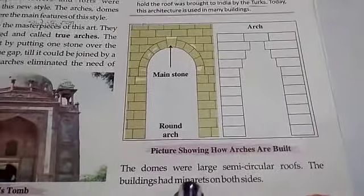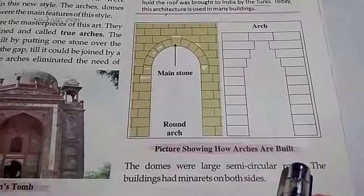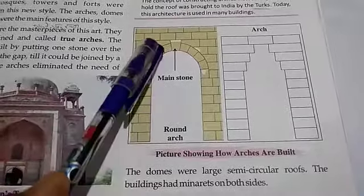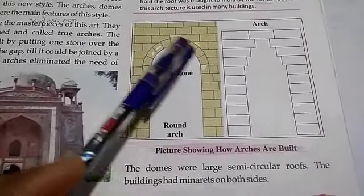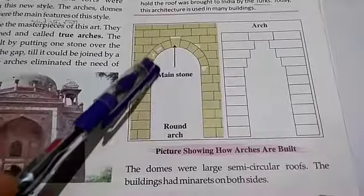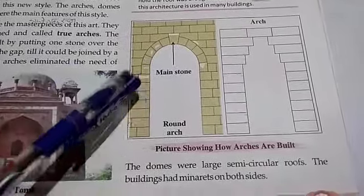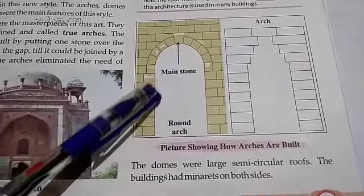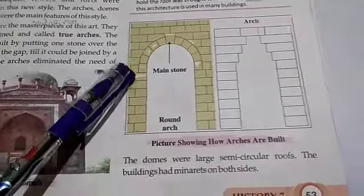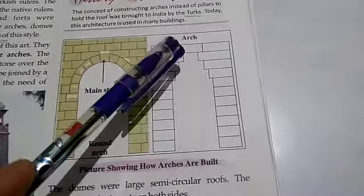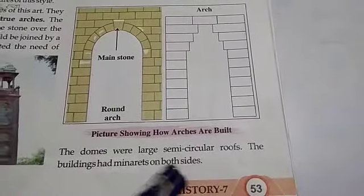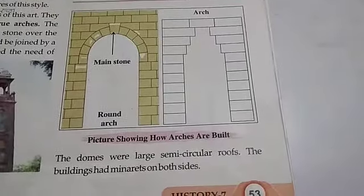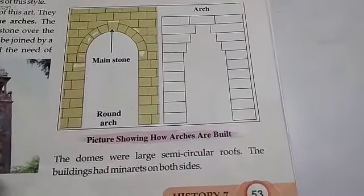You can see this picture showing how arches are built — round arches of stone placed at the top. The domes used to be large and semi-circular roofs. This dome concept is part of the Islamic style of architecture.